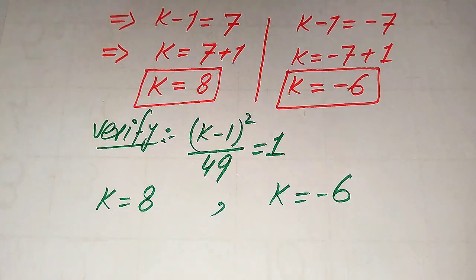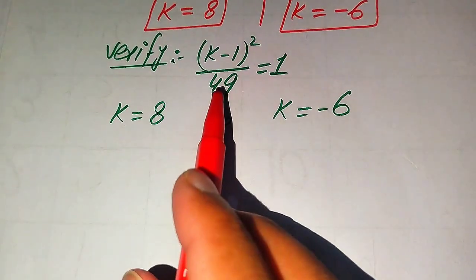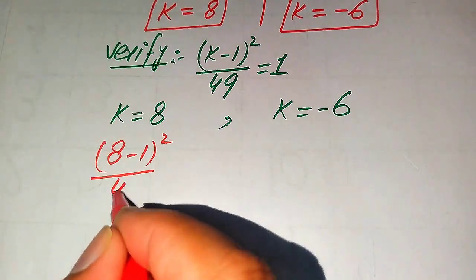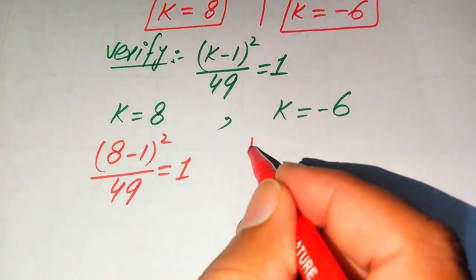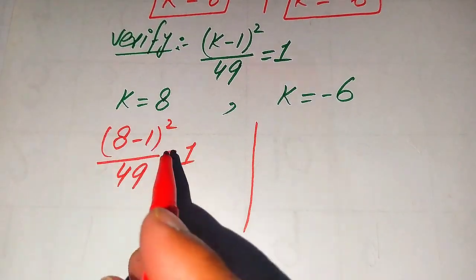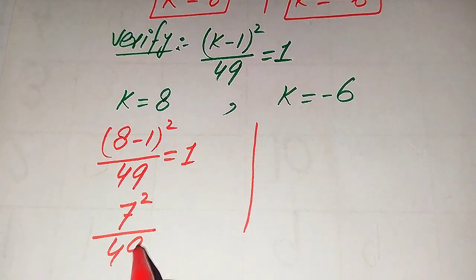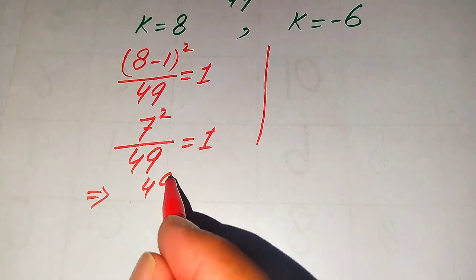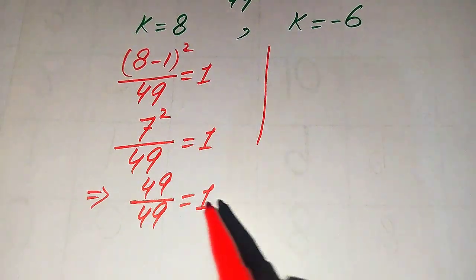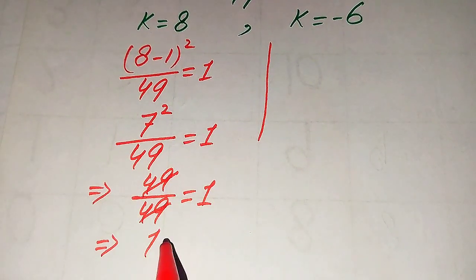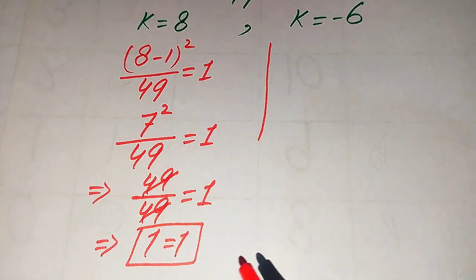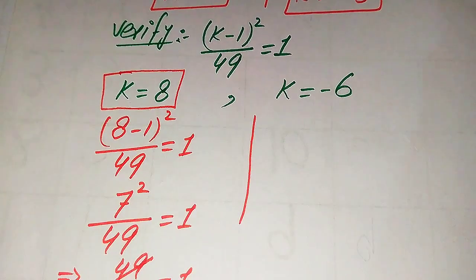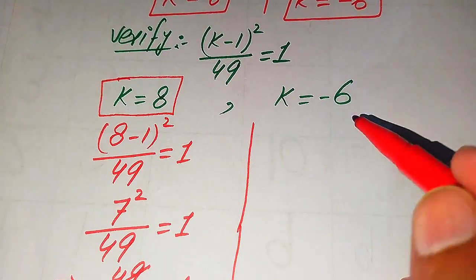First we verify k equals 8. We substitute k equals 8 into the left hand side: (8 minus 1) whole square divided by 49 equals 1. We have 7 squared divided by 49 equals 1. Since 7 squared is 49, we get 49 divided by 49 equals 1. These two cancel out and we get 1 equals 1, so k equals 8 satisfies the given equation.